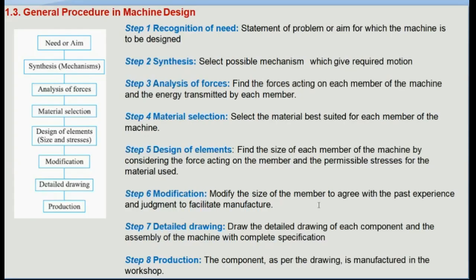The general procedure in machine design begins with identifying the need or aim — a statement of the problem indicating which machine or mechanical system has to be designed. The second step is synthesis: selecting possible mechanisms or combinations of mechanisms to achieve the desired motion. The third step is analysis of forces, determining the forces on each member based on energy transmission.